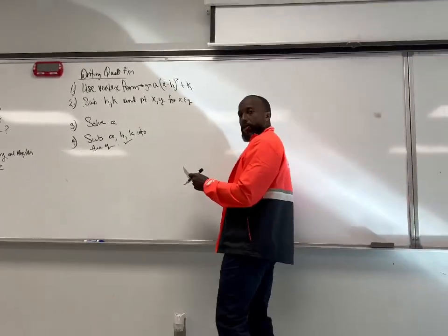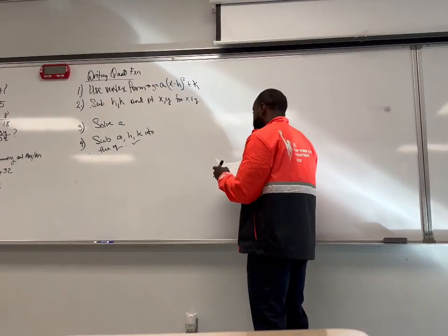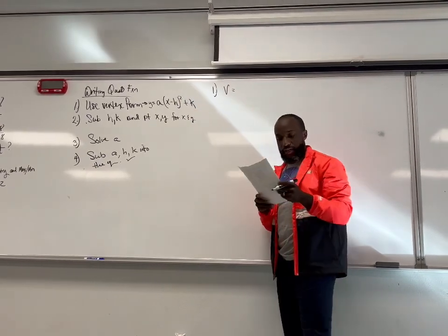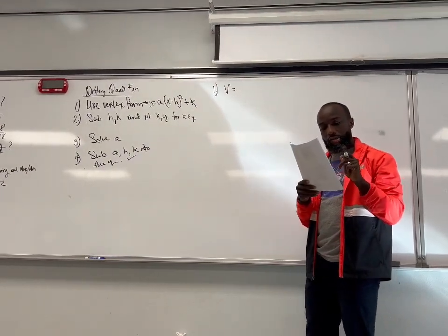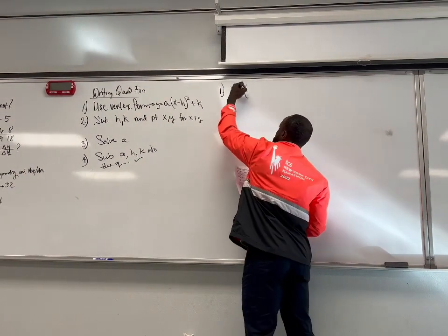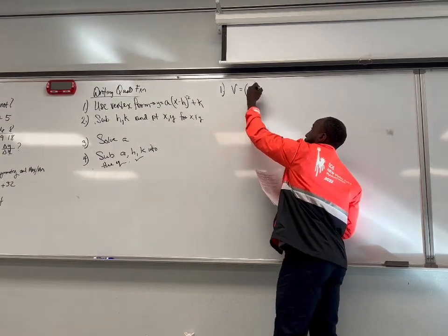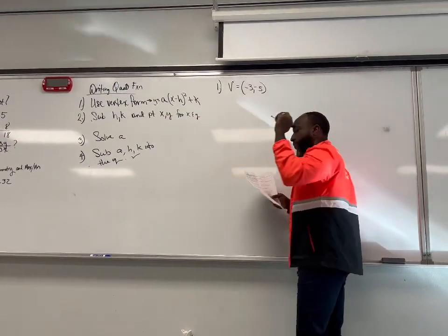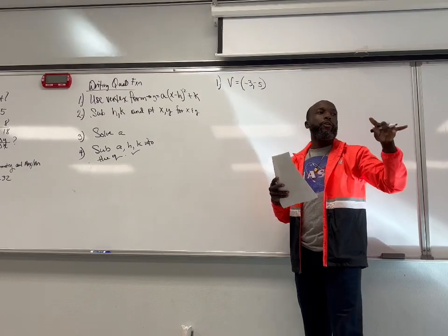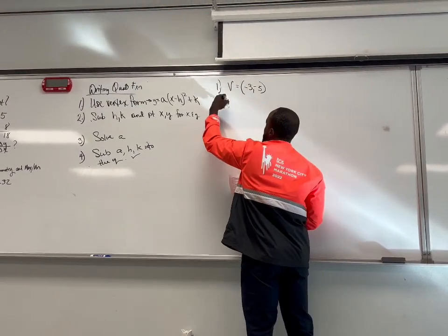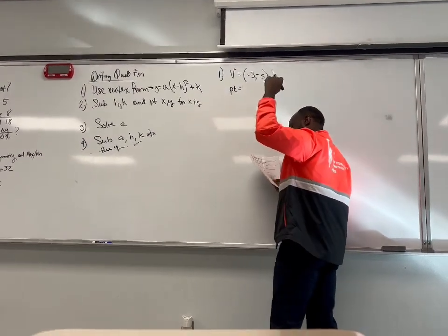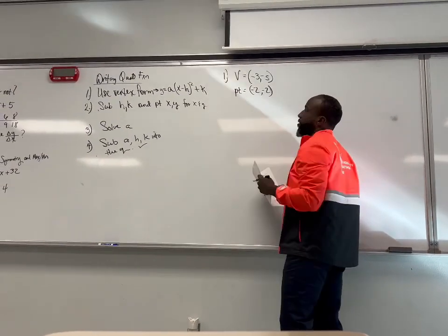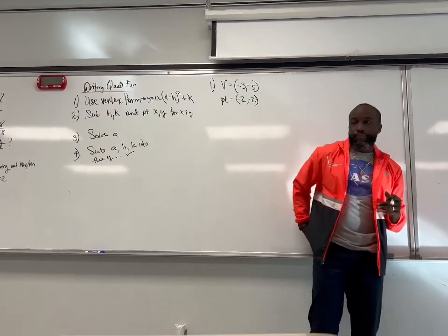Let's do a couple. Looking at this graph, first things first, tell me what the vertex is. What's the vertex? Negative 3, negative 5. So we got the vertex, and then give me one of those points. The vertex is negative 3, negative 5, and then one of the points is negative 2, negative 2. So we have a vertex and we got a point.